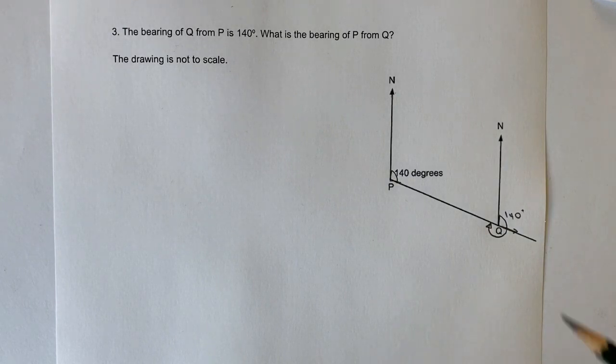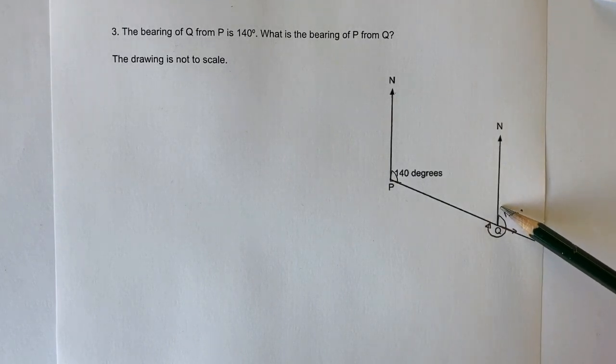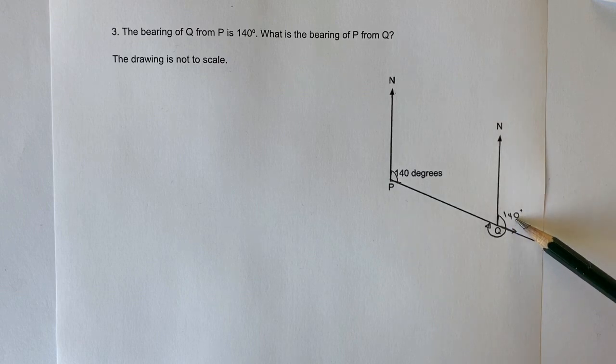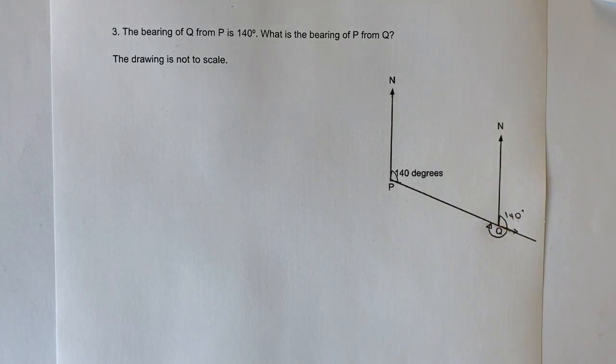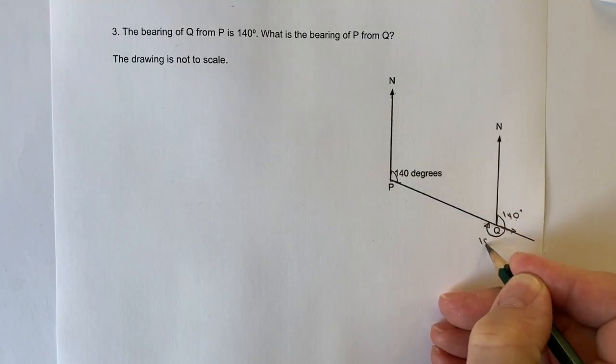So what we know now is that to go from north and around to this point is 140 degrees. Also, we know that this line here is a straight line. Now, in a straight line, there are 180 degrees.